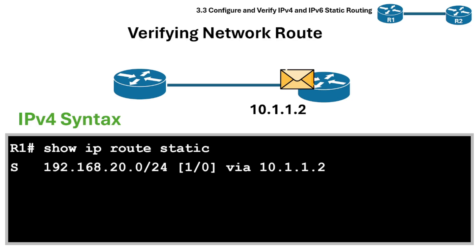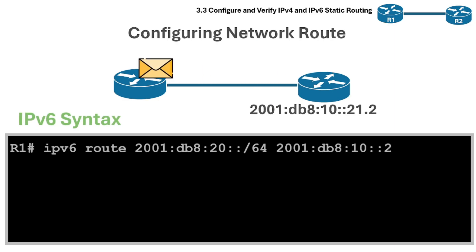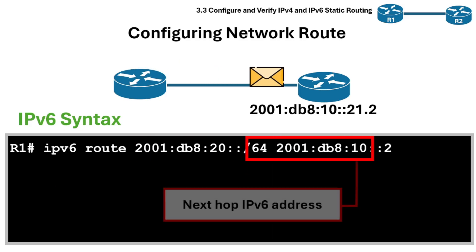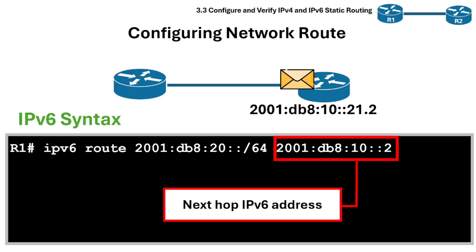From the output, under S, we can see that the destination network, mask, and next hop were configured. To configure a network route in IPv6, we use the command 'ipv6 route' followed by the destination IPv6 network and the next-hop IPv6 address.